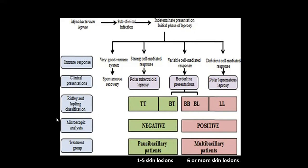Microscopic analysis: in borderline tuberculoid and tuberculoid variety the organism is negative — we do not see Mycobacterium leprae — whereas it is positive in borderline, borderline lepromatous, and lepromatous. Treatment group: paucibacillary has one to five skin lesions; multibacillary has six or more skin lesions.